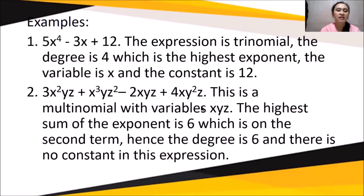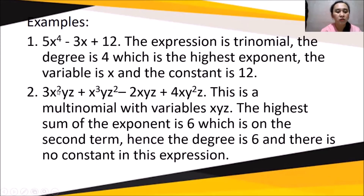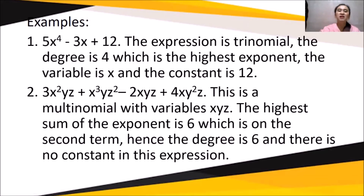Another example: 3x²yz + 3 + x³yz² - 2xyz + 4xy²z. This is multinomial — it has four terms — with variables x, y, z. The highest sum of exponents: first term 2+1+1=4; second term 3+1+2=6; third term 1+1+1=3; fourth term 1+2+1=4. The highest sum is 6 on the second term. Hence, the degree is 6 and there is no constant in this expression.